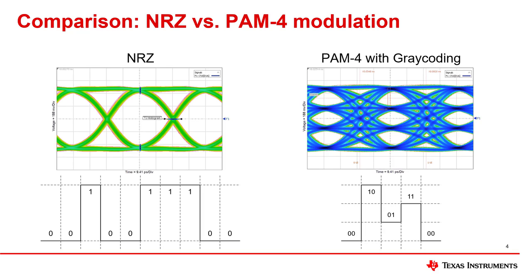The biggest drawback of PAM4 modulation is that it increases the difficulty to maintain good eye openings. As you can see in the eye diagram, there are three eye openings and many transition crossing points. The biggest advantage of PAM4 is demonstrated in the plot below: the same 10-bit binary value is transmitted at the same baud rate in half the time.